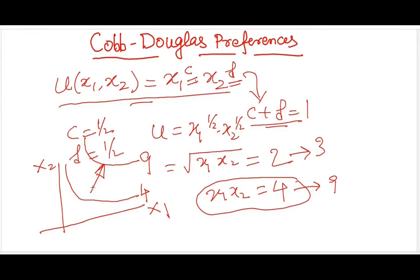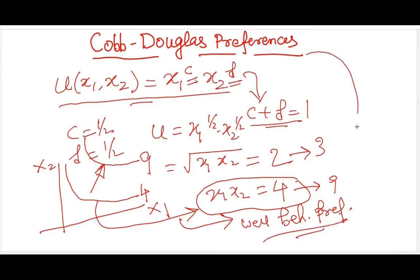And one more thing which you need to remember if you have not noticed till now is that these are rectangular hyperbola, right? So these rectangular hyperbola are like perfect representation of our well-behaved preferences. You remember the assumptions for well-behaved preferences? So generally, the Cobb-Douglas preference structure is used to give us the well-behaved preference example because they look very similar to what all the assumptions point out to of well-behaved preferences.